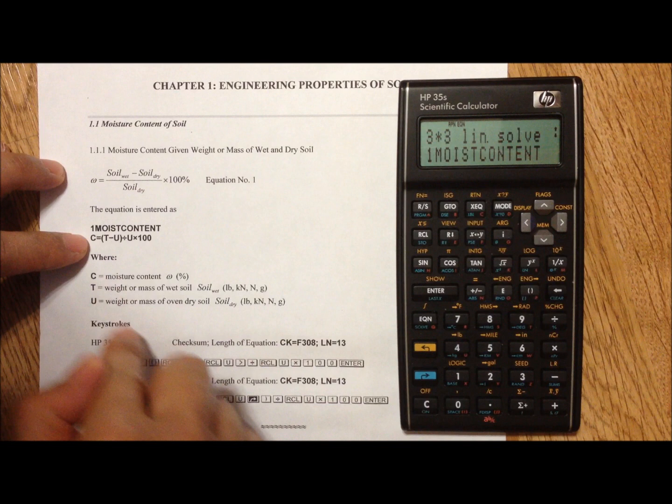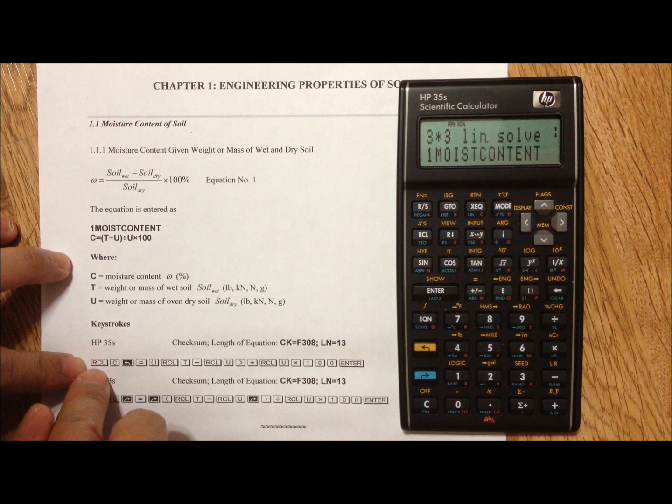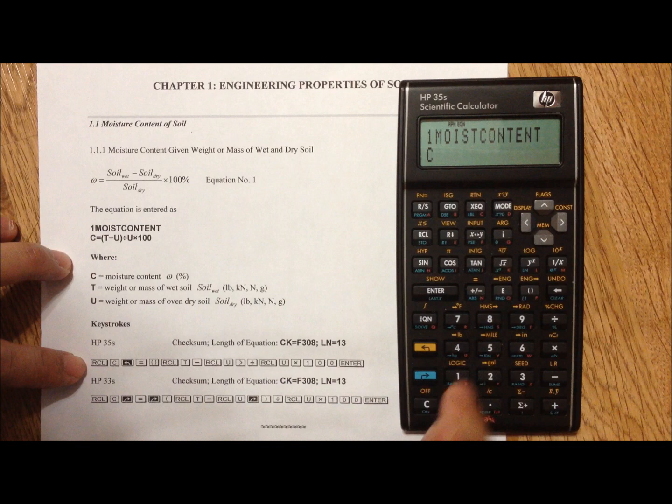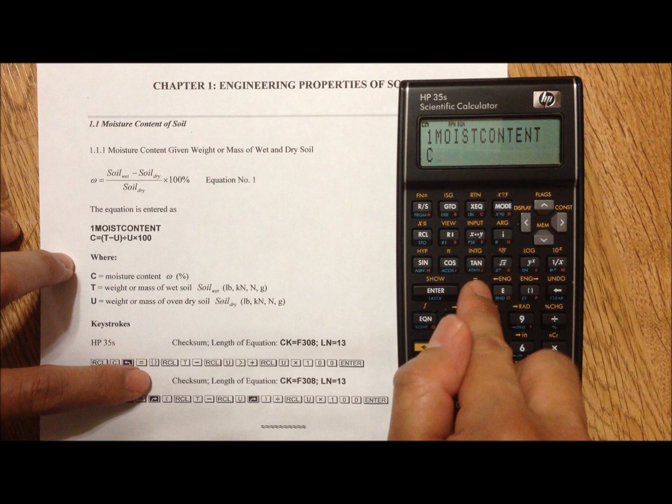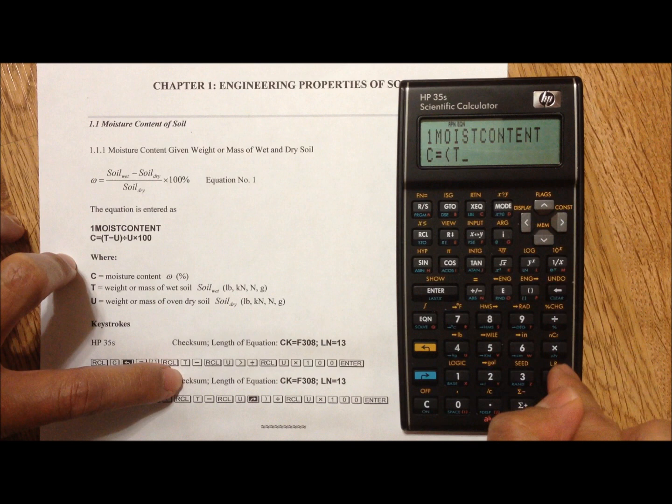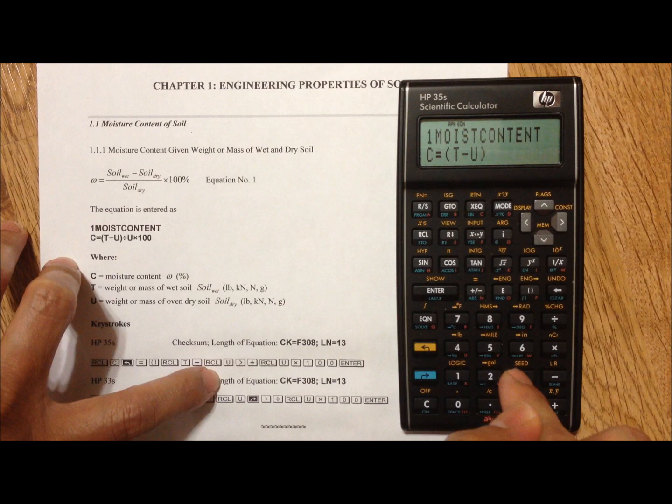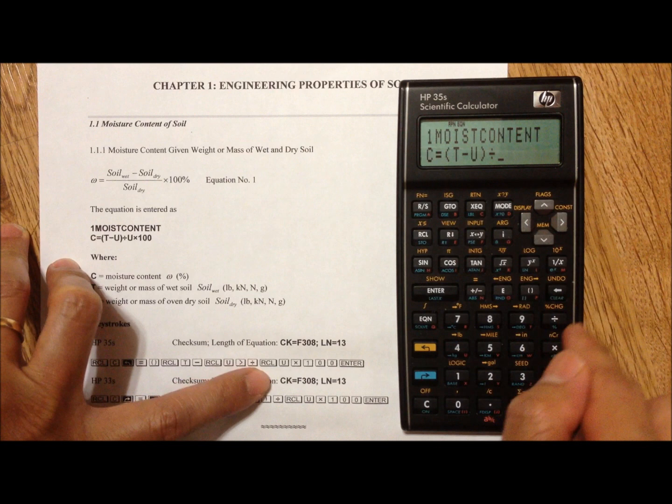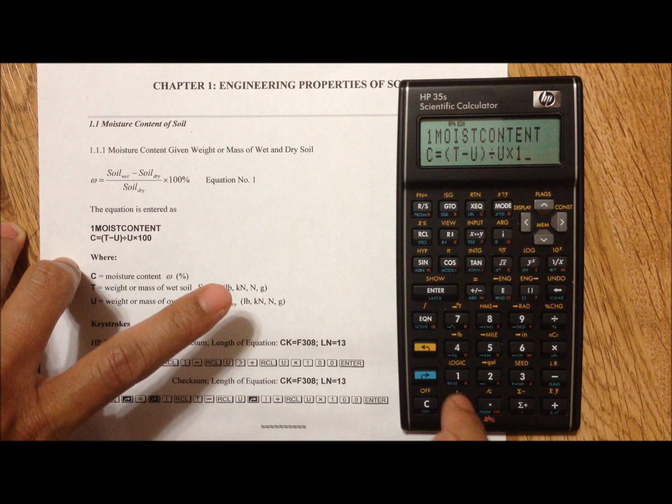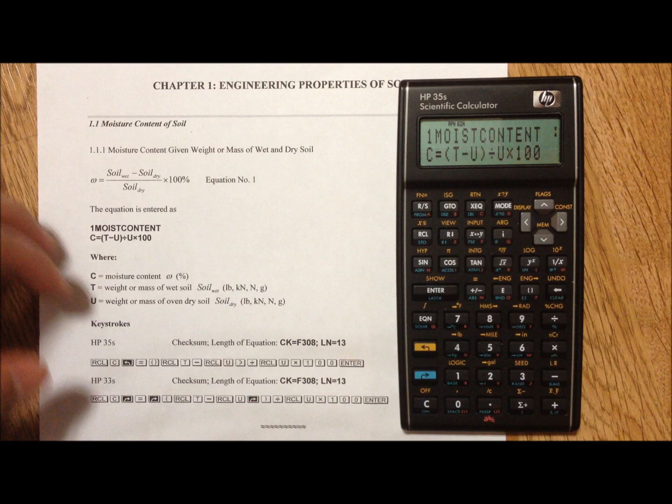Now we're going to enter the equation. The keystrokes are here for HP-35S - just follow from left to right: Recall C, yellow arrow, equals, parenthesis, Recall T, minus, Recall U, one space to the right, divide, Recall U, times 100, and enter.